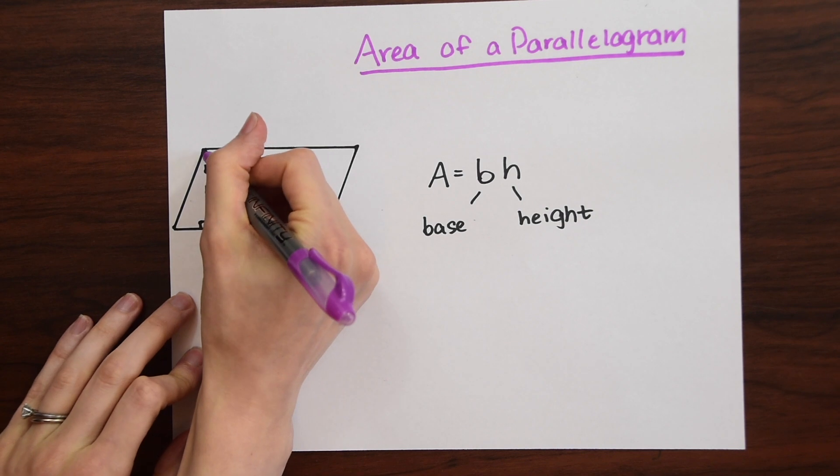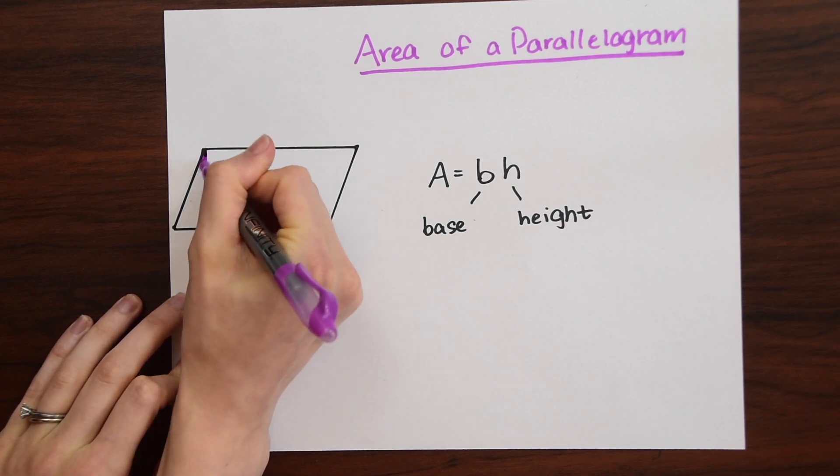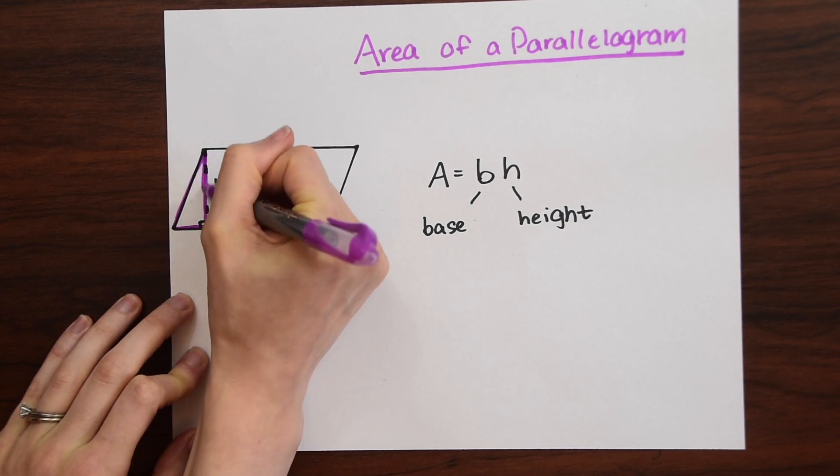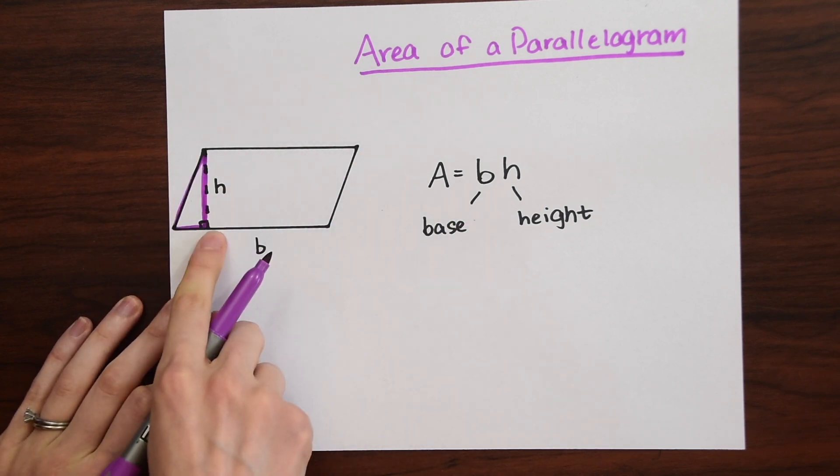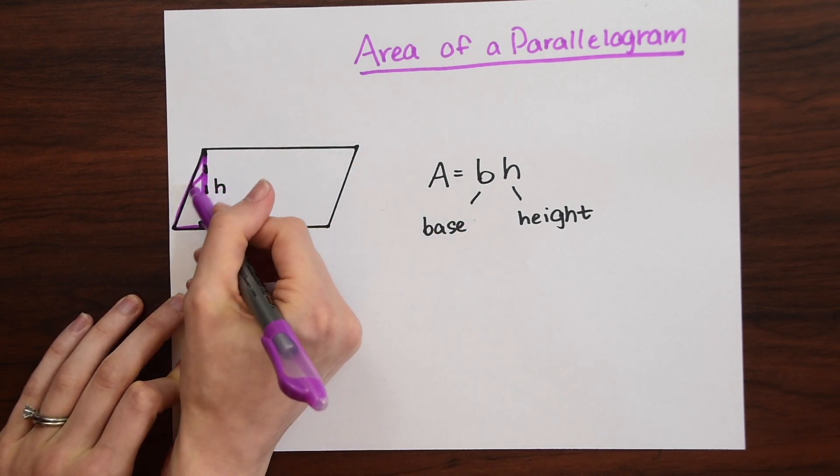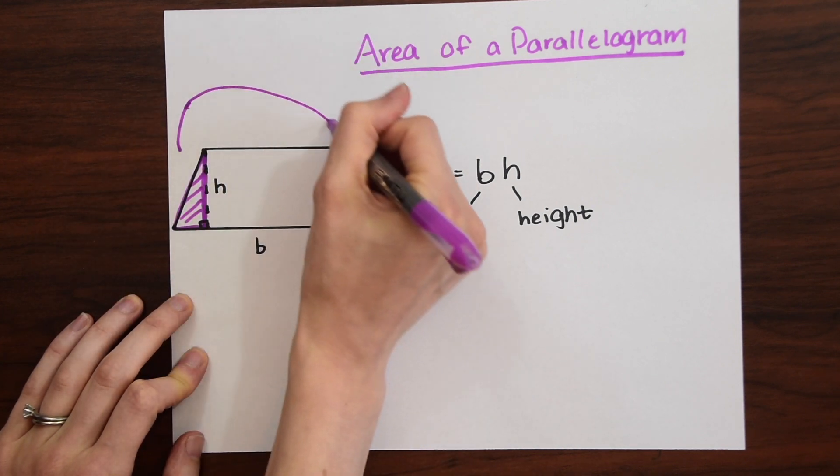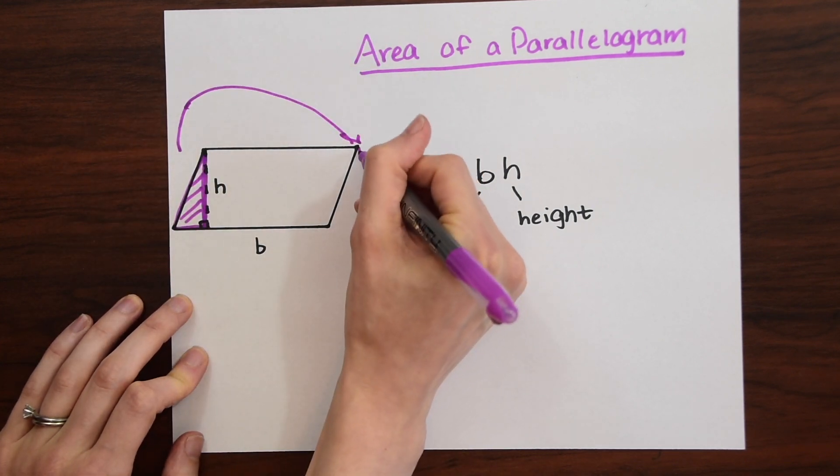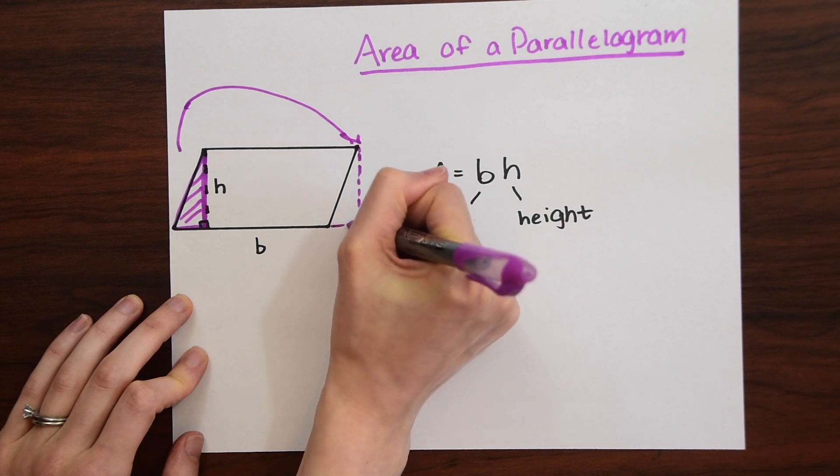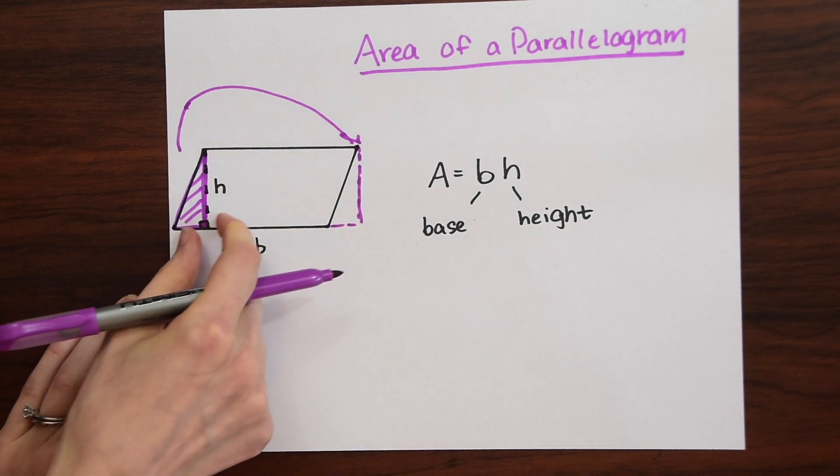So I just want to highlight this little triangle here that forms at the end of the parallelogram when we get the height. So if you were to take this triangle and flip or rotate it all the way around to the other side and fill it in here, or you could even see it like sliding back.